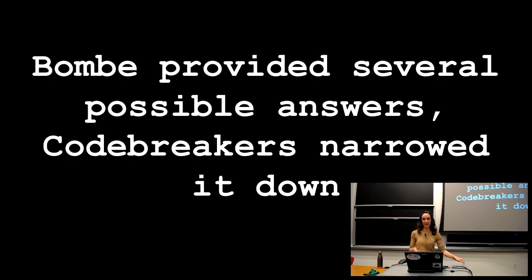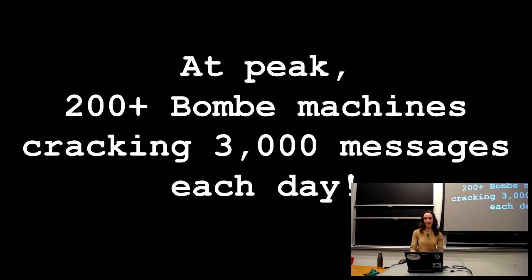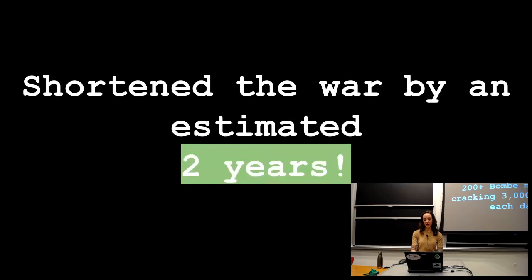Basically, the way it worked is that you would spit in the initial indicator for the day. The Bombe would do its computation, do its thing, and then give you several possible answers. And then the code breakers would work through those to figure out what the actual answer was. And at its peak, it's estimated that there were about 200 of these machines across England, and they were cracking in total 3,000 messages every day. And it's estimated that in the course of World War II, they cracked 2.5 million messages that they intercepted from the German army, which is huge. So I'm not sure how they came up with this estimate, but they think that this shortened the war by an additional two years, which is a huge gain if you think about all the lives that would have been lost if the war had continued for another two years. So huge victory for Alan Turing and the people that worked on this encryption monolith.